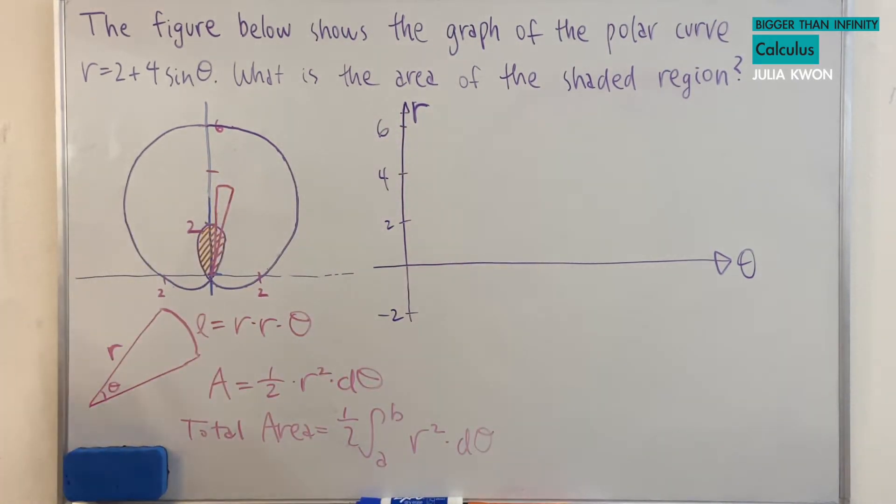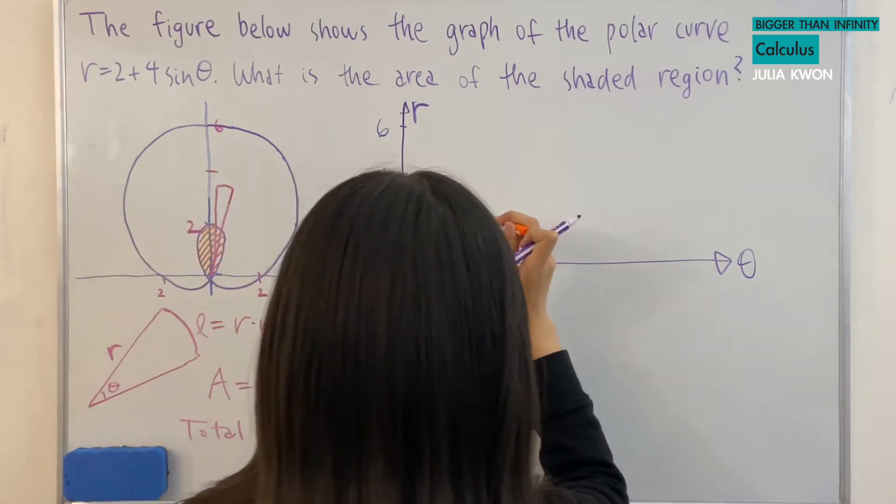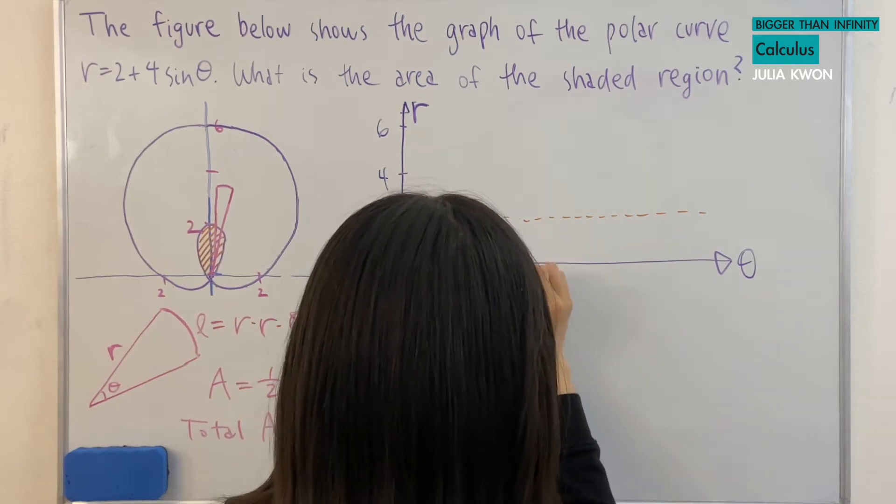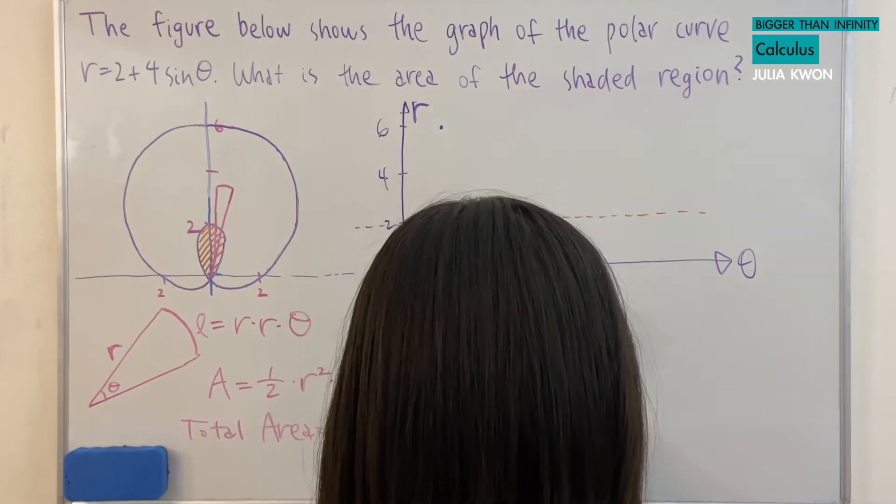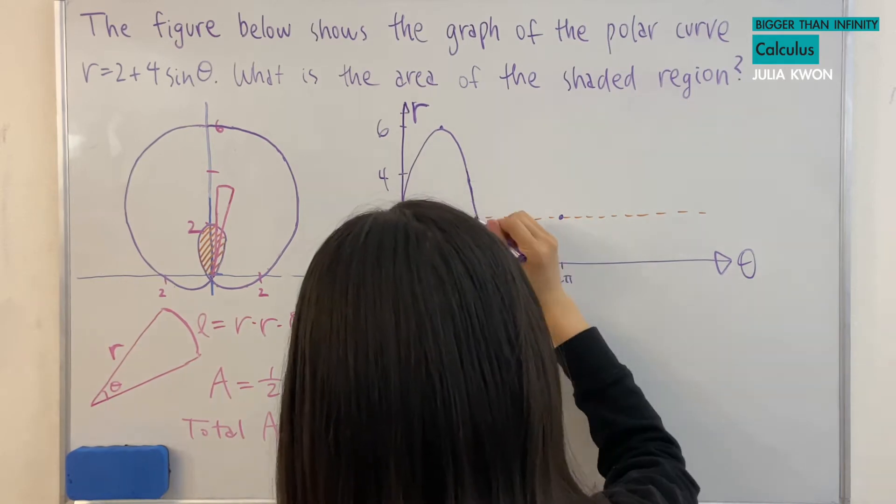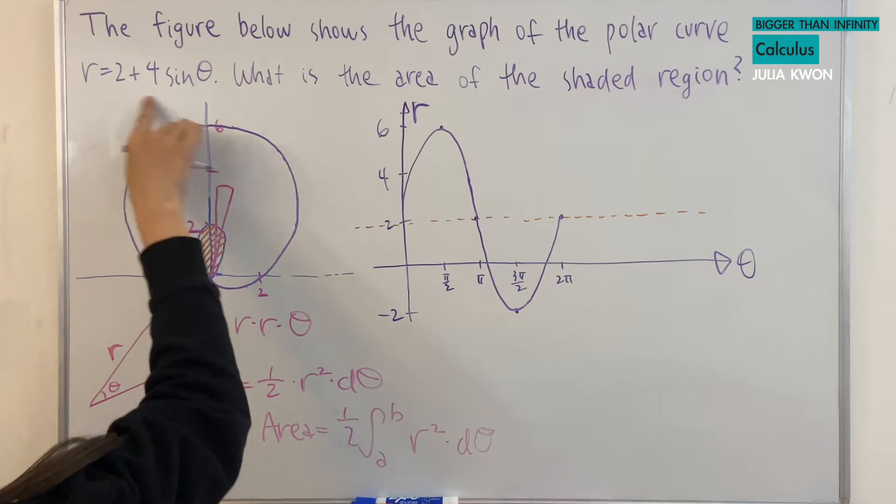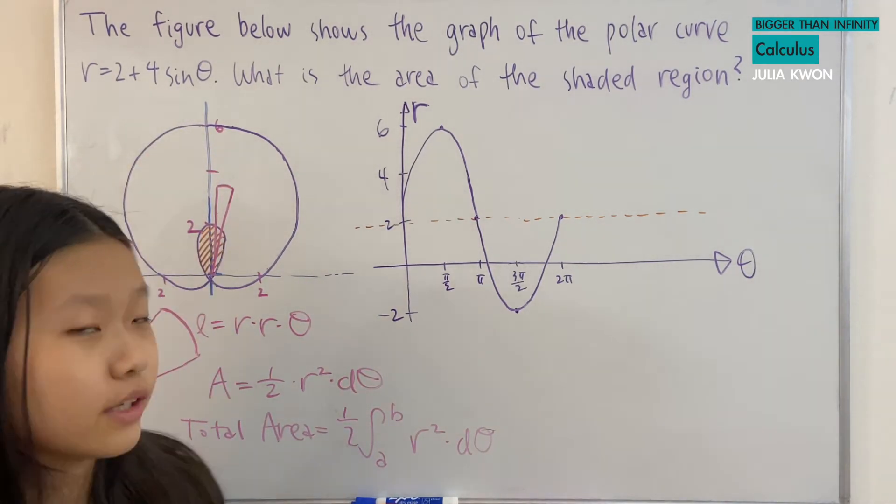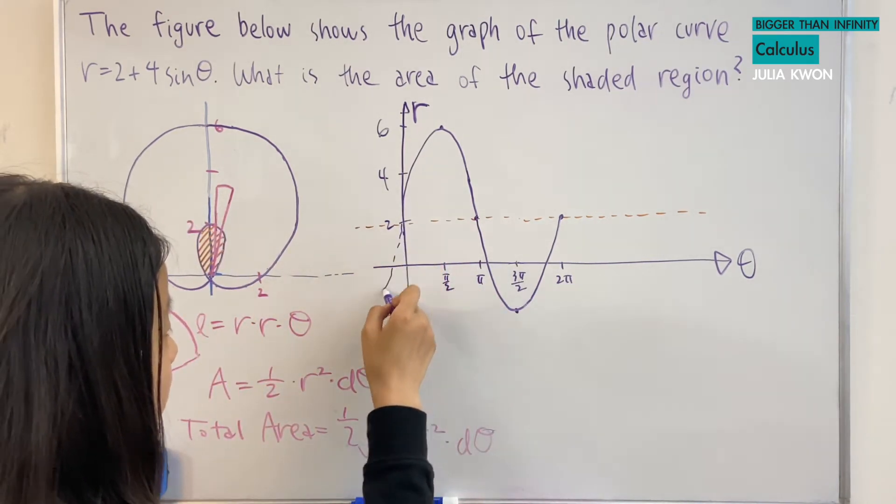And now if I draw it, we'll have something like this. Okay, so this is what it would look like if I draw this polar curve or polar equation by treating it as x and y values. And of course, it would still keep going here.